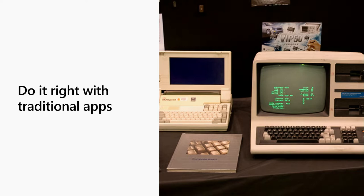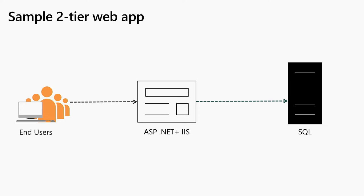We'll start with how we do a lift-and-shift with traditional apps. A simple two-tier web app starts with the user through a browser, then you have ASP.NET and IIS in the middle, and SQL at the back end. When you think about containerization, we recommend starting small — just start with the middle tier and make a container. SQL has an Express version containerized on Windows, and later we'll show a private preview signup for SQL Professional as well. We'll show you how to containerize an IIS web service and run it lift-and-shift in a containerized workload.